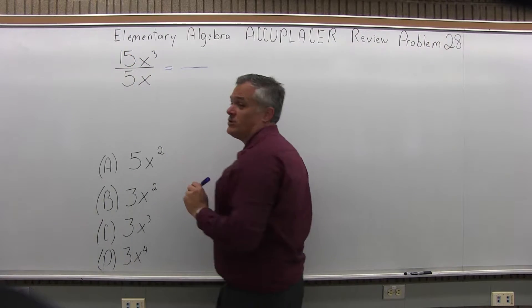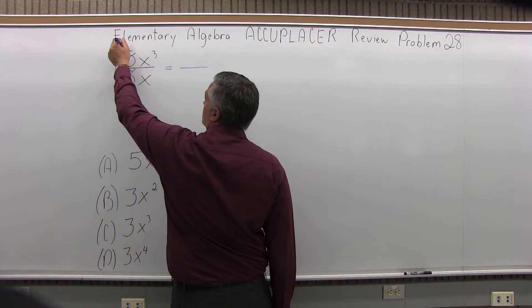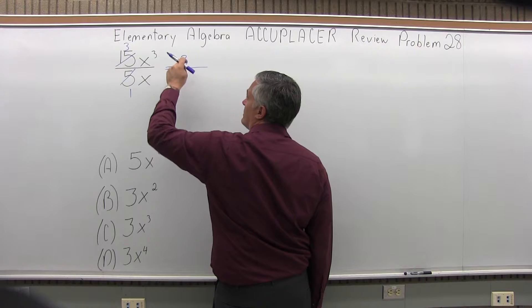So the 5 and 15 reduce pretty nicely. The 5 goes into 5 once and it goes into 15 three times. So 3 for the top, 1 for the bottom.